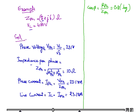Cos phi is RPH upon ZPH. Now RPH is 8, it is given here, and ZPH we have calculated to be 10. So it becomes 0.8, which is lagging.